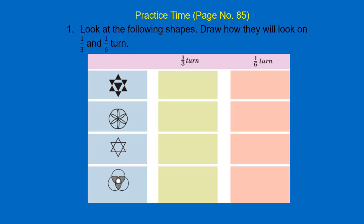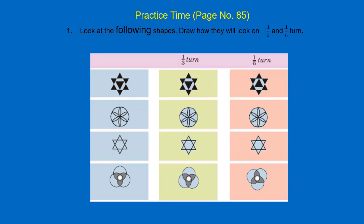Now we draw the shapes and see how they look on one-third turn and one-sixth turn in this table. The first figure looks the same on one-third turn but not on one-sixth turn. The second one looks the same on one-third turn and also on one-sixth turn. The third picture also looks the same on one-third turn and one-sixth turn. The fourth one looks the same on one-third turn but doesn't look the same on one-sixth turn. Thank you.